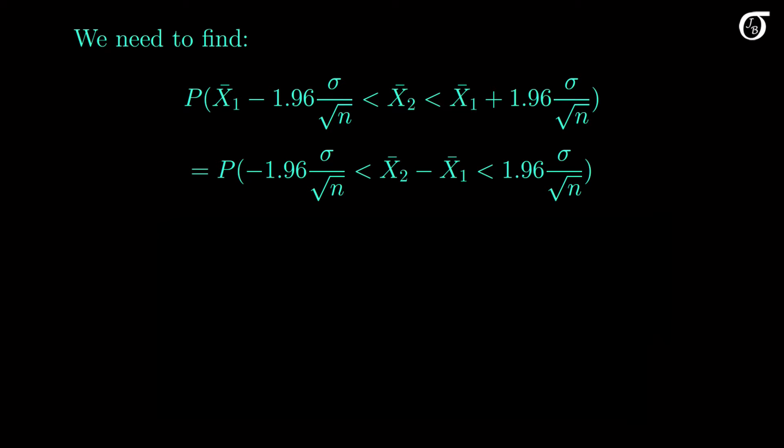I discuss the details of the sampling distribution of the difference in sample means in great detail in other videos, but here it's sufficient for us to know that under the conditions described above, x bar 2 minus x bar 1 is normally distributed, with a mean that is equal to the difference in population means, but since we're sampling from the same population here, the difference in population means is 0.